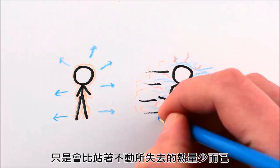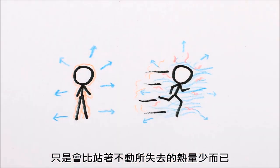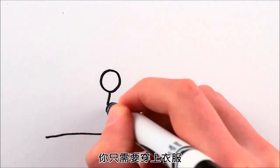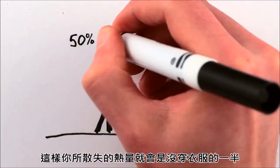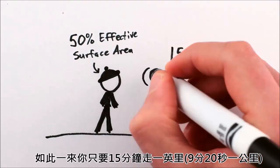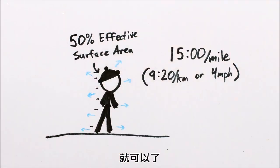And this wouldn't even mean you're not losing heat, it's just the point at which you lose less heat running than you do standing still. Now, if a five-minute mile sounds like a challenge, don't worry. All you need to do is put on some clothing, like enough that you're only losing half as much heat as a naked person, and a 15-minute mile, basically a brisk walk, will do just fine.